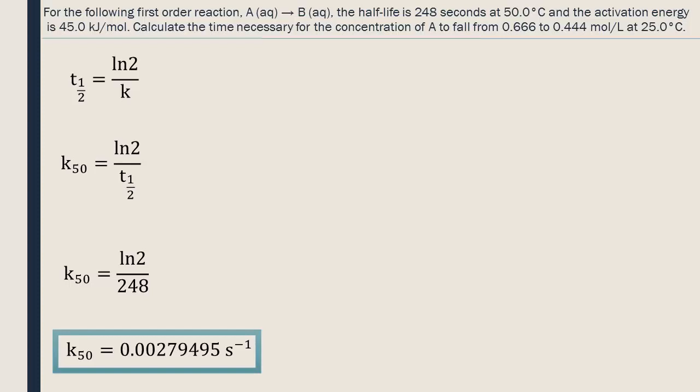If the question had asked us to find the time at 50 degrees Celsius, we could have inserted our rate constant directly into this equation. However, since we need to find our answer at 25 degrees Celsius, we need to first find our rate constant at this temperature.